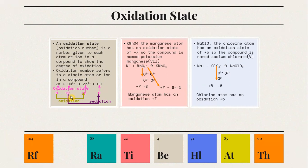The process of oxidation means the gain of oxygen, loss of electron, or increase in oxidation state — in this case, Zn goes from 0 to +2, which is an increase in oxidation state. Whereas in reduction, there is loss of oxygen, gain of electron, or decrease in oxidation state, so going from +2 to 0 represents reduction.